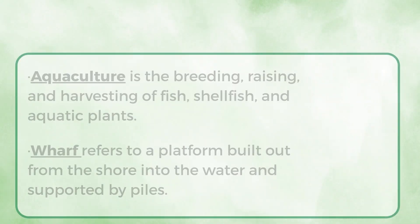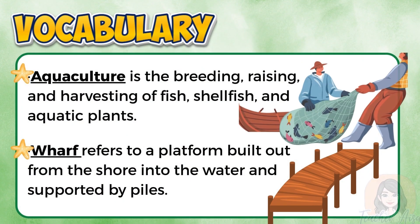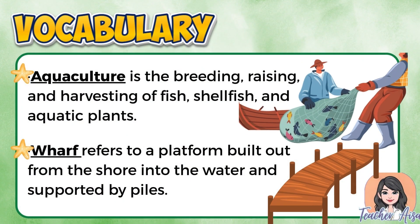Before we begin our lesson, let us first unlock some important terms. Aquaculture is the breeding, raising, and harvesting of fish, shellfish, and aquatic plants. It is often called fish farming and it helps provide a steady supply of seafood. A wharf refers to a platform built out from the shore into the water and supported by piles.